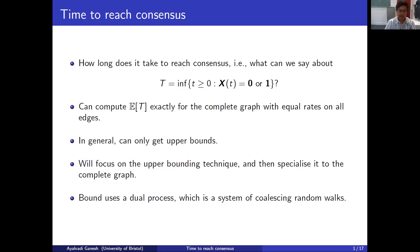This technique is very interesting: it uses what's called a dual process. It looks at the voter model backwards in time, and if you look at it backwards in time it becomes a system of coalescing random walks. We'll introduce this process and study it in order to find the upper bound on the time to reach consensus.